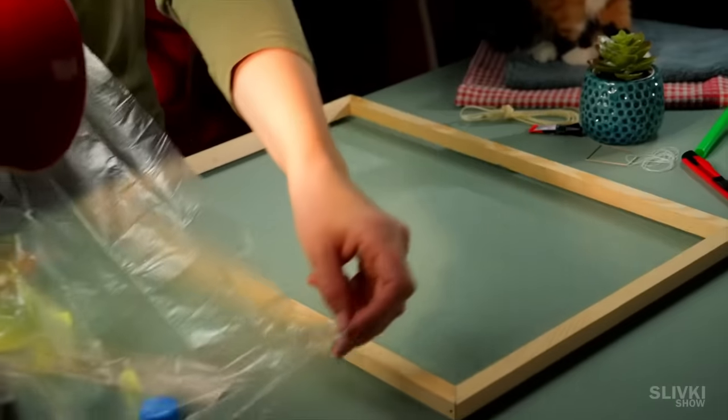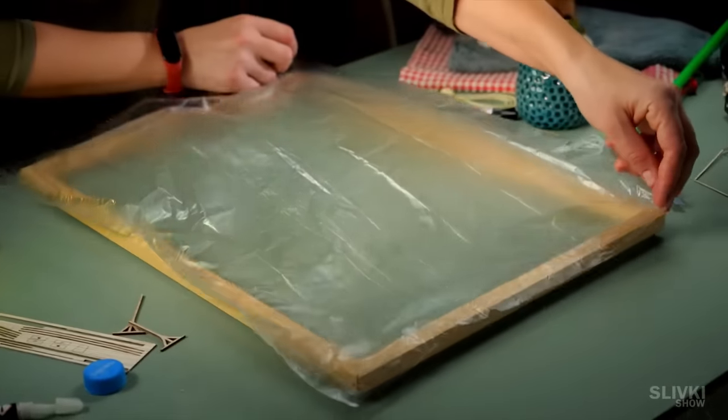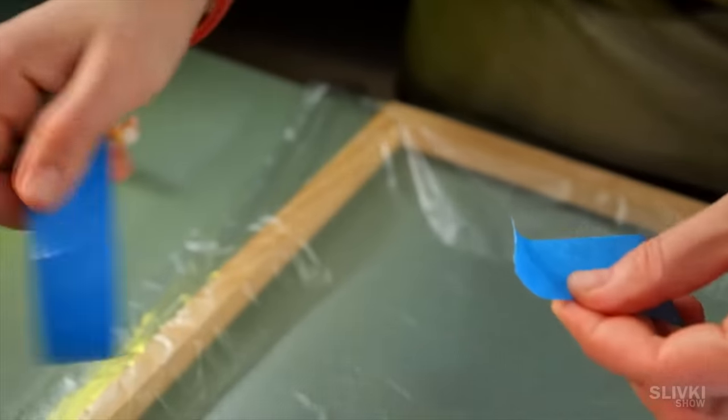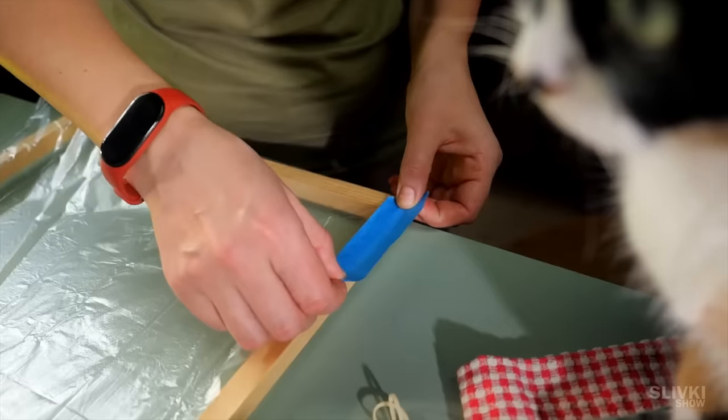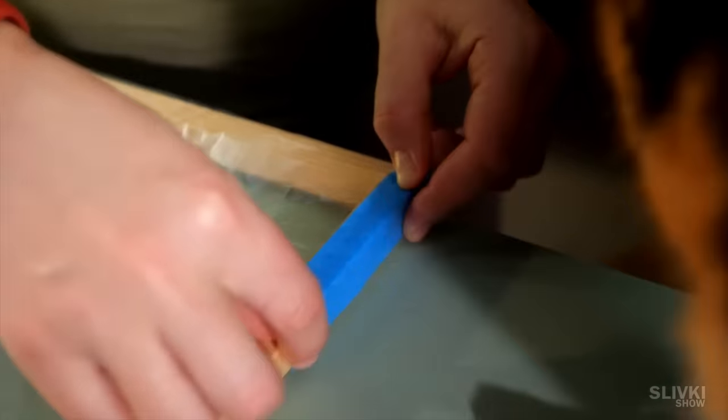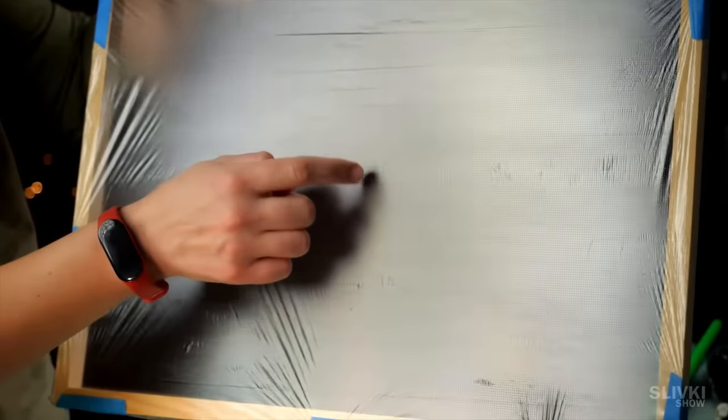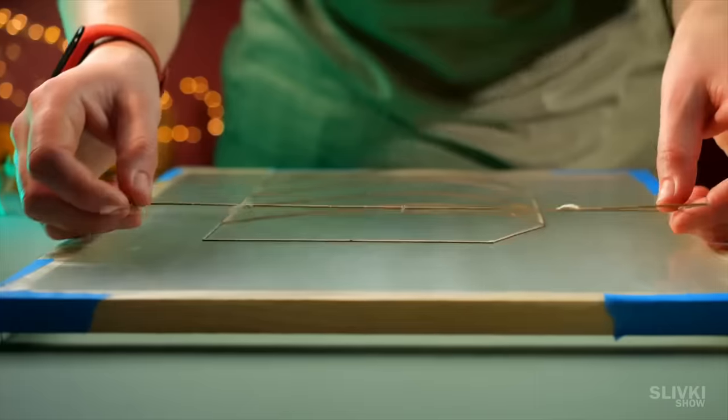While Cookie was playing with the wrap, we made a wooden frame of this size. You can of course do everything without it, but it seems much more convenient. Using masking tape, we fix the wrap on the edges of the frame, so that a slight tension is created. But it is important not to stretch it too much.